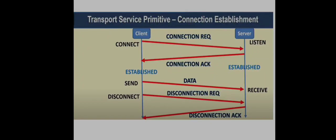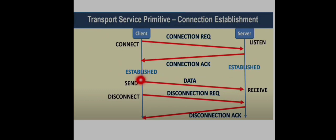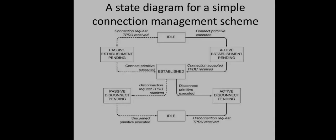For connection establishment, the client sends a connection request when the server is in the listen state. The server, ready to accept, acknowledges back, and the connection is established. Once established, both client and server can send and receive data any number of times. When data transfer is over, the client requests a disconnect, and upon receiving it, the server acknowledges back, after which the connection is terminated.